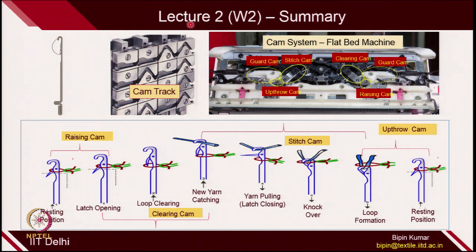Before we start, let's quickly recap what we covered in the previous lecture. In the previous lecture I gave more emphasis on the cam track, because this is the fundamental principle element during the knitting process. The cam interacts with the cam track which is created by the cam system. I also introduced you to the cam jacket of single bed flat knitting machines, and some of the knitting cams were explained in detail, including raising cams.